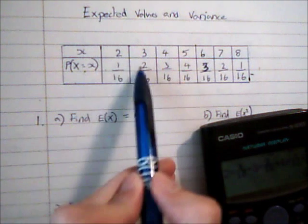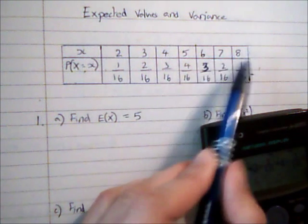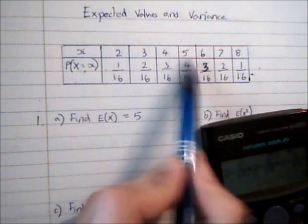because it goes 1 over 16, 2 over 16, 3 over 16, 4 over 16, 3 over 16, 2 over 16, 1 over 16, by symmetry we could have worked out that it was 5 as well.